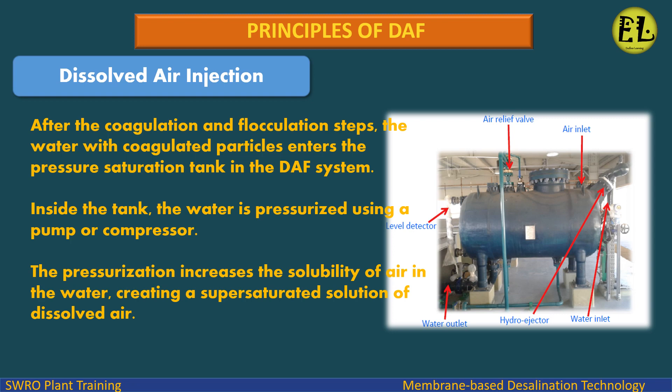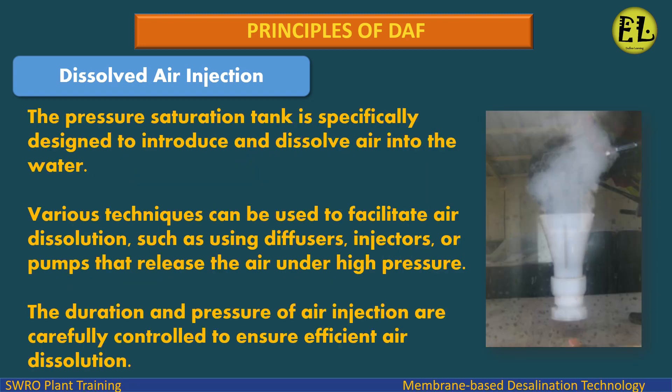Dissolved air injection: After the coagulation and flocculation steps, the water with coagulated particles enters the pressure saturation tank in the DAF system. Inside the tank, the water is pressurized using a pump or compressor. The pressurization increases the solubility of air in the water, creating a supersaturated solution of dissolved air. The pressure saturation tank is specifically designed to introduce and dissolve air into the water. Various techniques can be used to facilitate air dissolution, such as using diffusers, injectors, or pumps that release air under high pressure. The duration and pressure of air injection are carefully controlled to ensure efficient air dissolution.